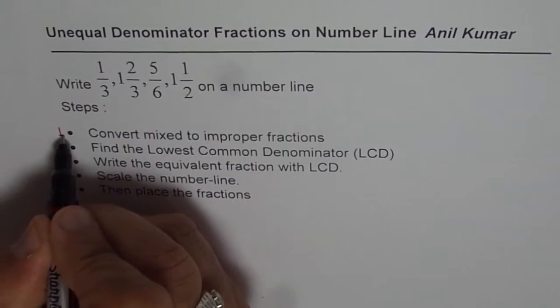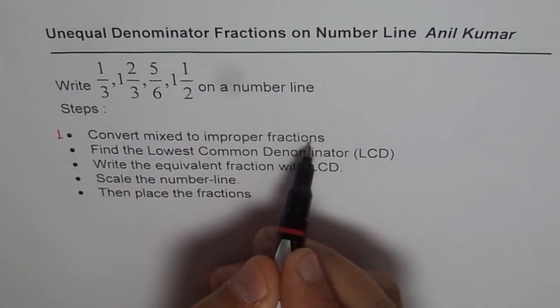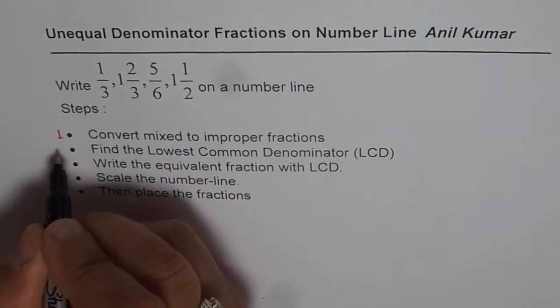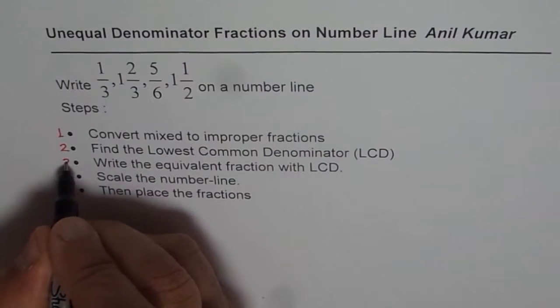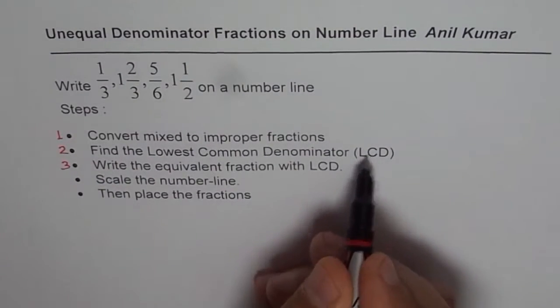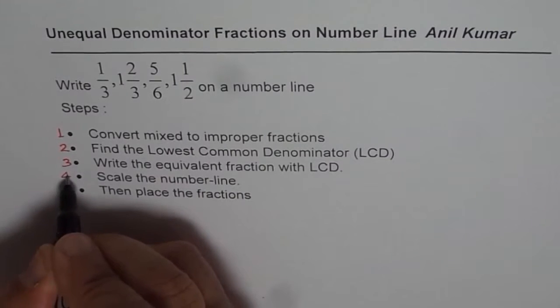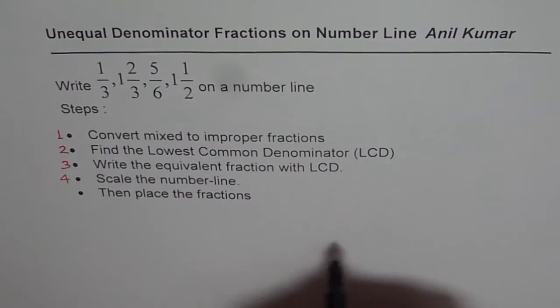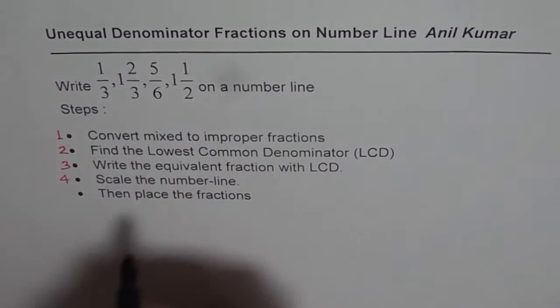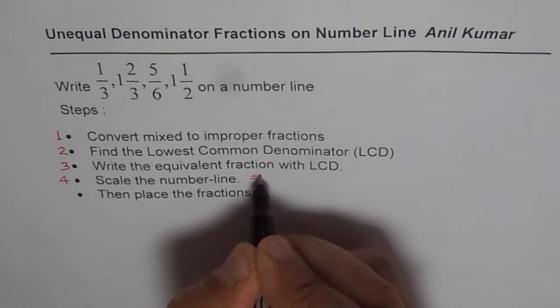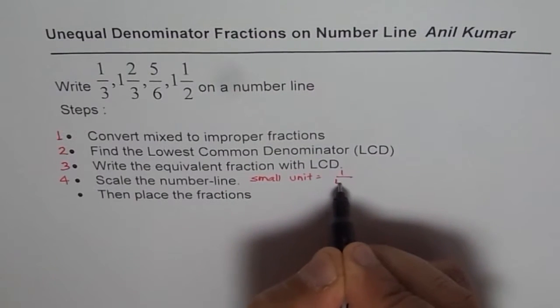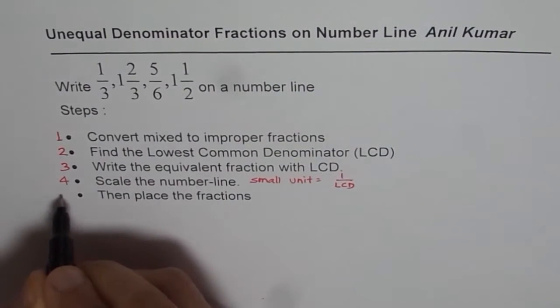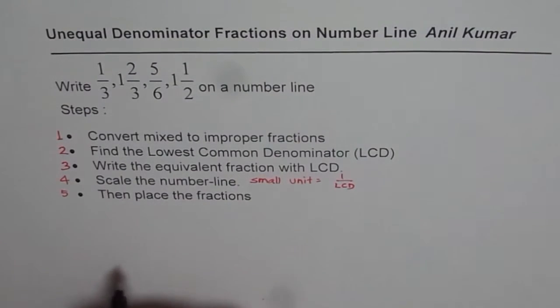First step is convert mixed to improper fractions. Second step will be find the lowest common denominator. Third is write equivalent fractions with the lowest common denominator. Fourth is scale the number line. That means sketch the number line and each small unit will be 1 over lowest common denominator. And fifth and final step is to place these fractions on the number line. So these are the steps involved.